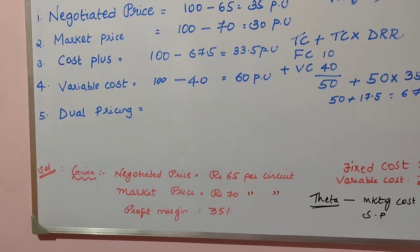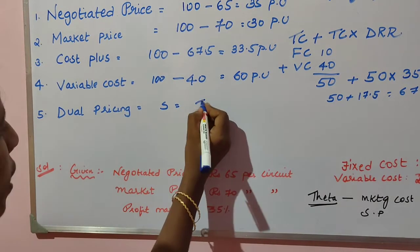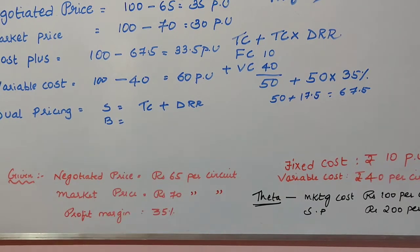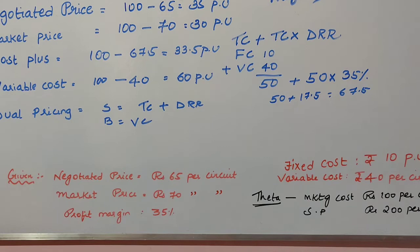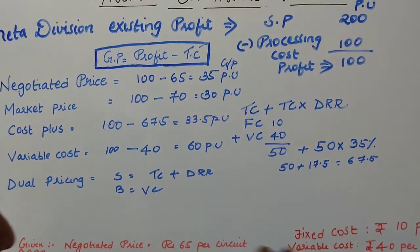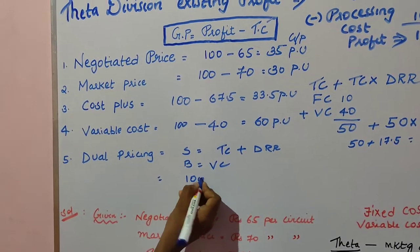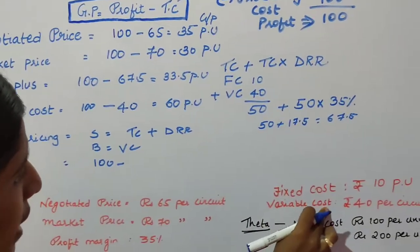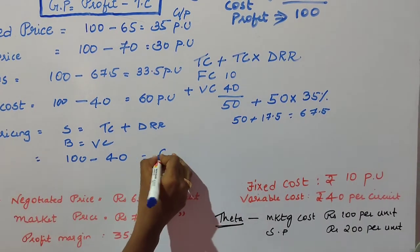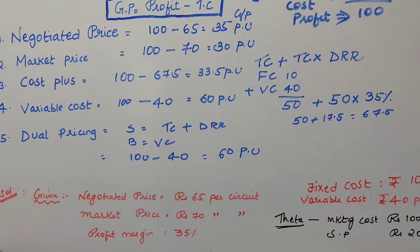Coming to dual pricing: there are two transfer prices. For the seller, the transfer price is total cost plus desired rate of return. For the buyer, the transfer cost is the variable cost. We are finding the gross profit of the buyer, which here is Theta. For Theta, the transfer price is the variable cost, which is 40. So profit (100) minus transfer cost (40) equals 60 per unit gross profit under dual pricing for Theta company. This concludes the first problem.